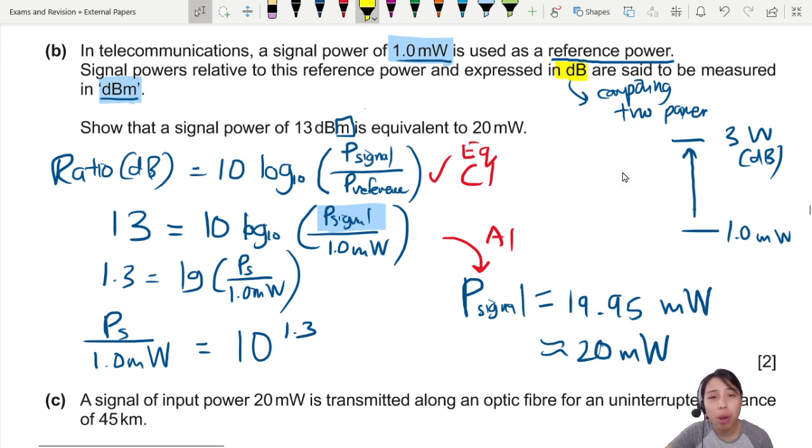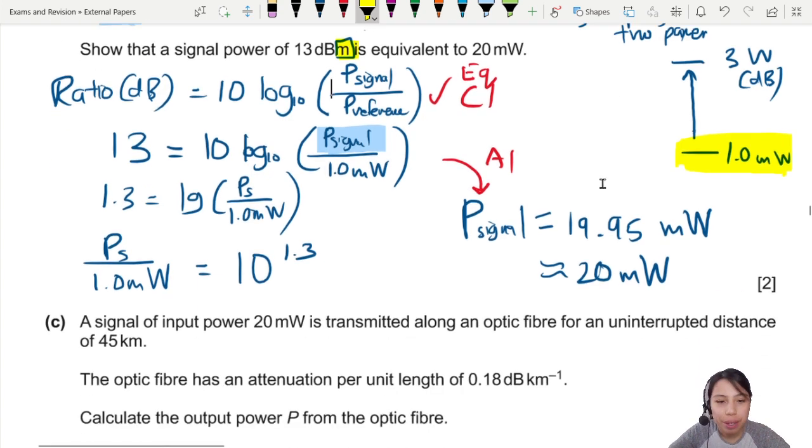Remember, dB is comparing two things. We need a ground reference point, a very low signal to compare. Here, 1.0 milliwatt is our reference point. If we use that as our reference point, everything we can express with this special dBm.